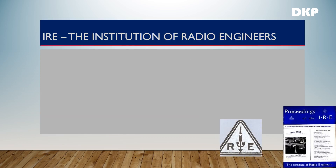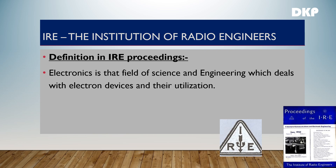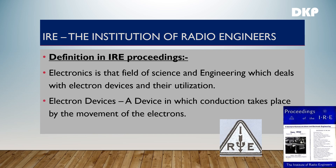The Institution of Radio Engineers has given a standard definition for electronics in their proceedings: electronics is that field of science and engineering which deals with electron devices and their utilization. Note the term used here — electron devices. An electron device is a device in which conduction takes place by the movement of electrons, which can be inside a semiconductor, vacuum, or gases.